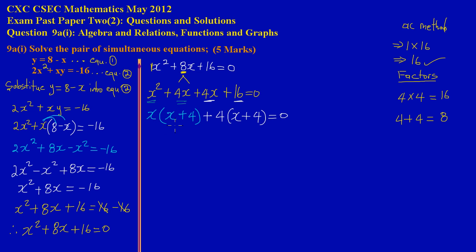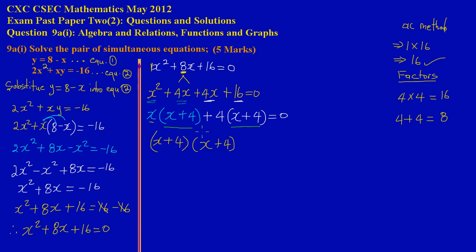To verify you're on the right track, both brackets must contain the same expression — here both contain (x + 4). Since they match, we can write the factored form as (x + 4)(x + 4) = 0.